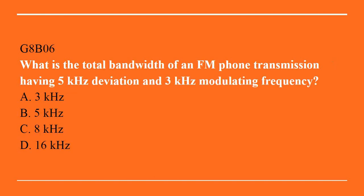G8B06: What is the total bandwidth of an FM phone transmission having 5 kHz deviation and 3 kHz modulating frequency? A. 3 kHz. B. 5 kHz. C. 8 kHz. D. 16 kHz. Correct answer is D. 16 kHz.